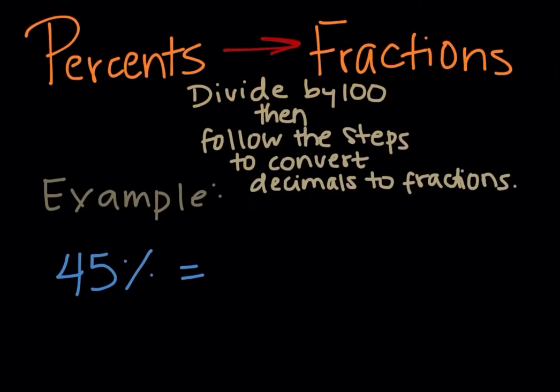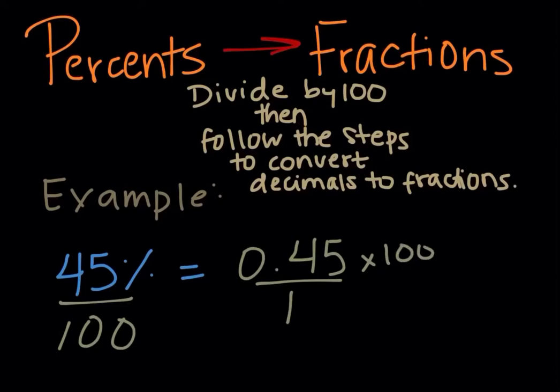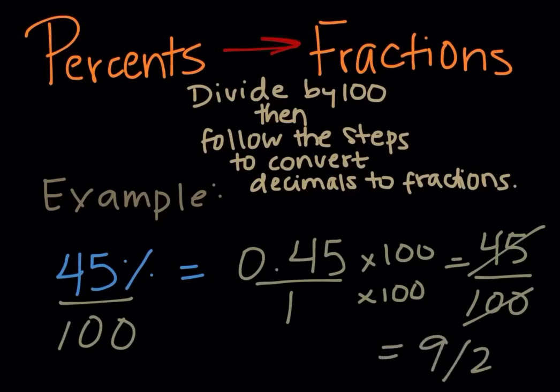Last but not least, if you need to convert from percents to fractions, first you divide it by 100, and then you have to follow the steps to convert decimals to fractions. So first divide by 100, you have 0.45. Now you're going to do the same steps from decimals to fractions. So you put a 1 below, you multiply by 100 up and down, that's 45 upon 100, and then you simplify it to get 9 upon 20.